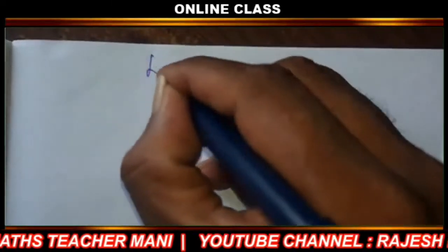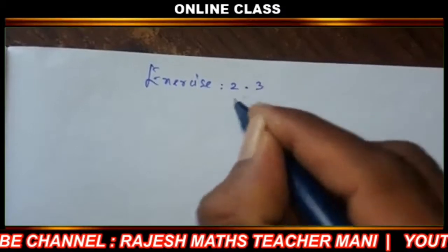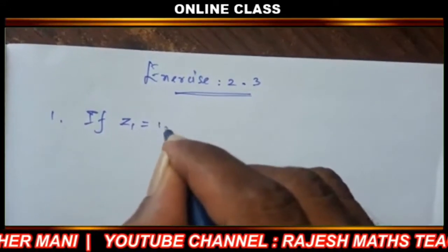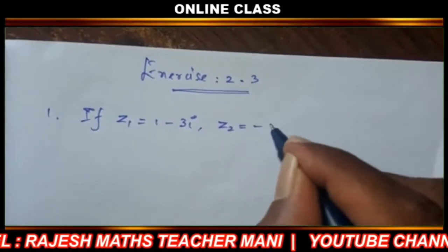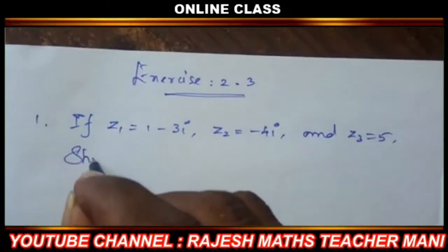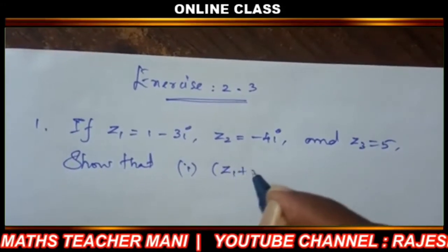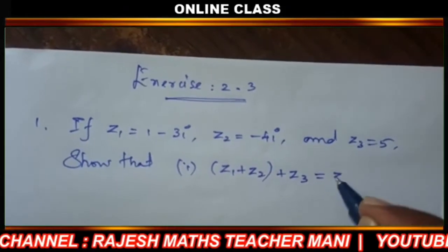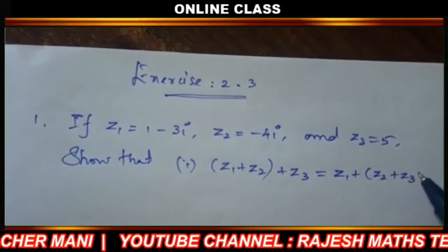Good morning to all. Exercise 2.3, Question number 1. If z1 equals 1 minus 3i, z2 equals minus 4i, and z3 equals 5, show that z1 plus z2 plus z3 equals z1 plus z2 plus z3.